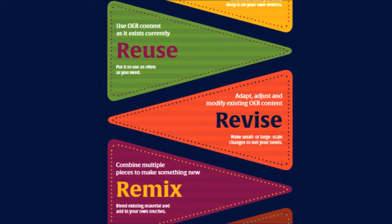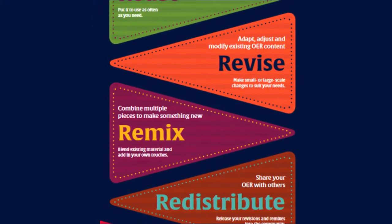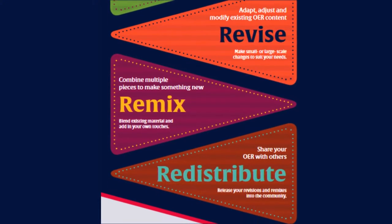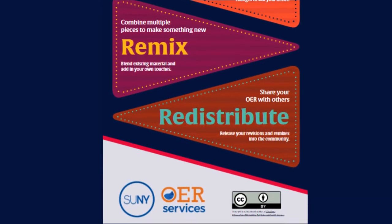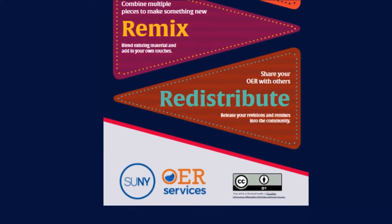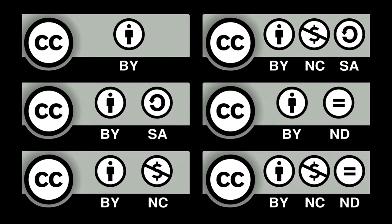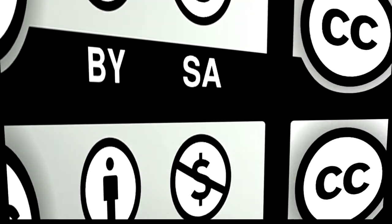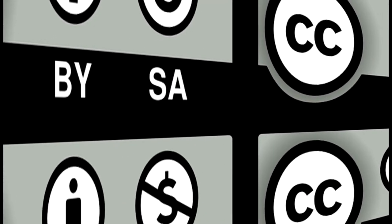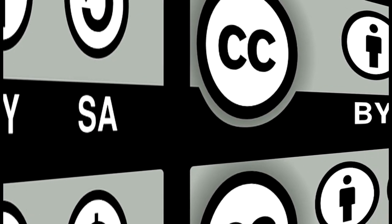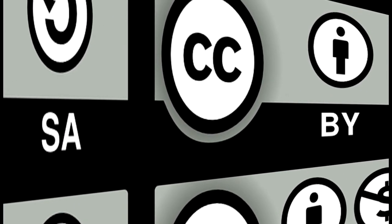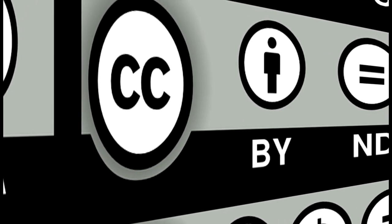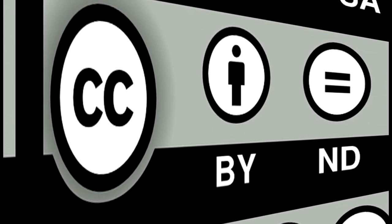It, too, was used, adapted, and remixed, and the creator has been given credit. Creative Commons licenses often accompany open educational resources. The license associated with a resource guides which of the 5 R's of open you can engage in with regard to the resource.